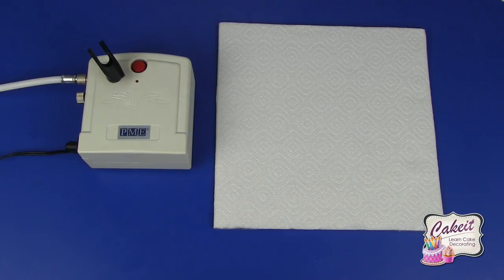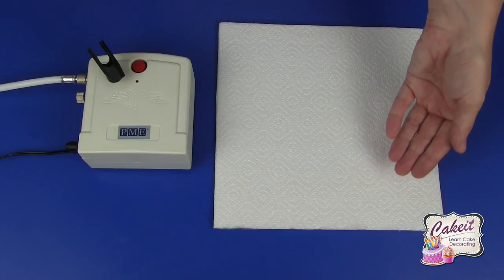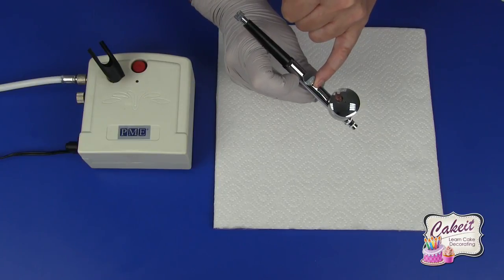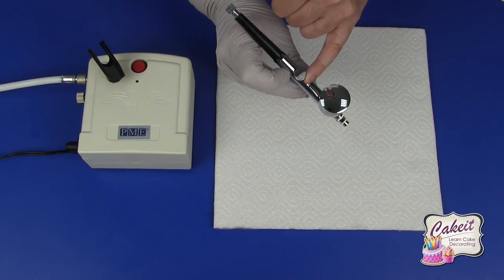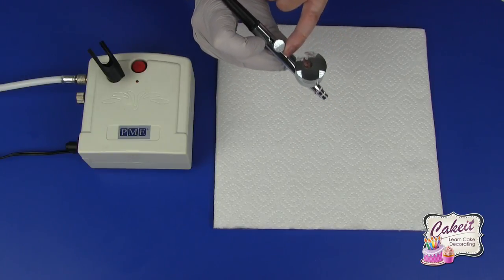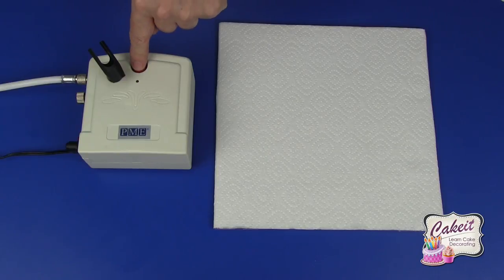So I'm actually going to switch the airbrush on and then I'm going to vary the distance from my work and also vary the pull on the lever to control the airflow. It's a good idea to practice on a piece of paper towel or card before you actually begin work on your cake. So I'm going to switch it on at the button.